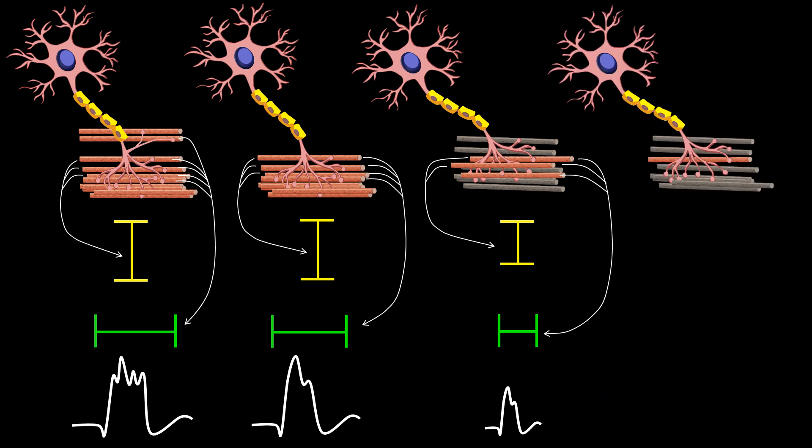The last anatomical motor unit represented has only one muscle fiber capable of generating an action potential. Since the fiber's action potential will pass close to the electrode it will contribute to both the amplitude and duration, but whereas the duration will be significantly less than in the prior example, the amplitude will be relatively less impacted, as illustrated in the potential.